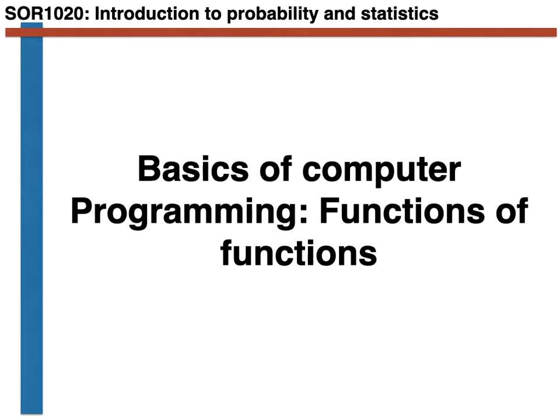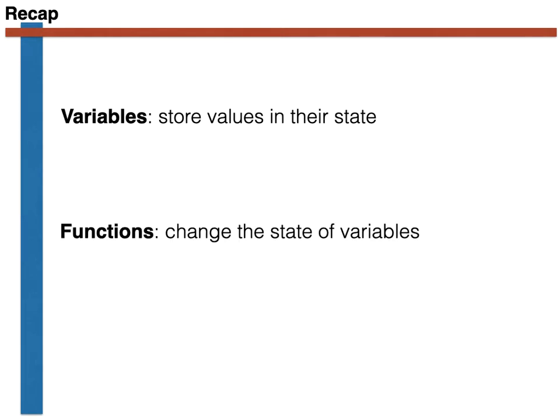We have introduced the distinction between variables and functions and we have said that variables are labeled addresses in memory. We've talked about how these labeled addresses have a state and how we can thus store a value in the state of the variables. We have then said that a function is a list of instructions for changing the state of a variable.